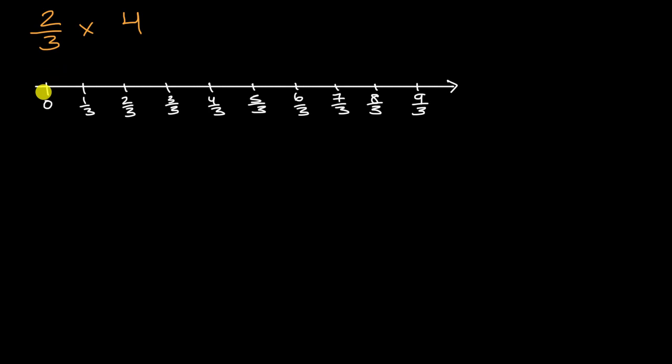And so where is two thirds times one? Well, two thirds times one is just going to be two thirds. We just take a jump of two thirds. So that is times one.